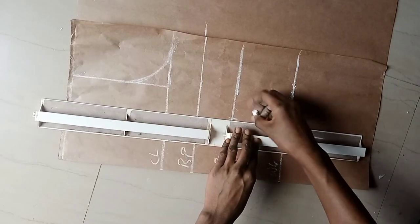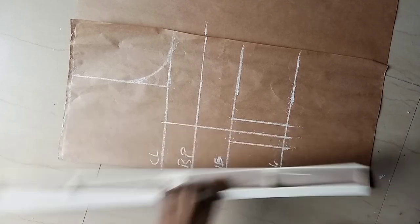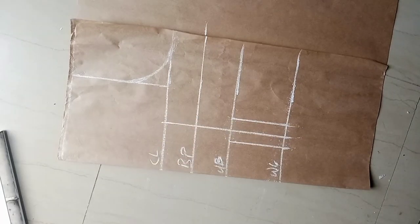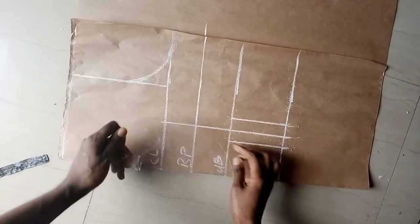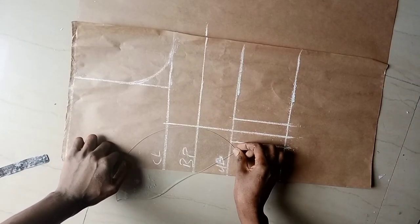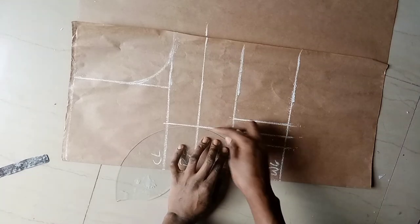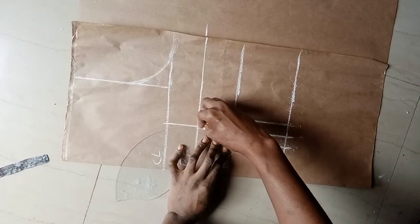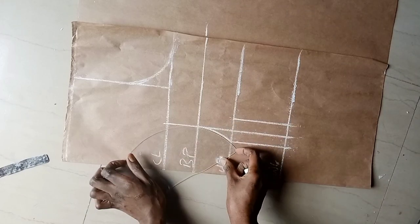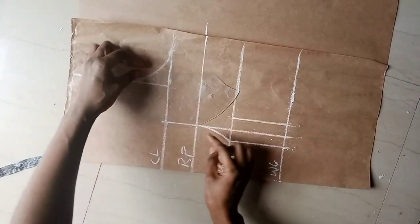After that, I'll use my curve rule. I'll connect it to this place like so, and I'll repeat the same thing on this other side.